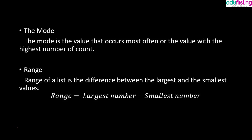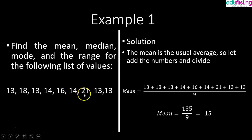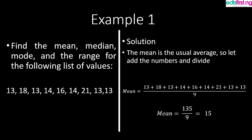Example one: find the mean, median, mode, and range for the following list of values: 13, 18, 14, 16, 14, 21, 13, 13. Solution: the mean is the usual average, so let's add all the numbers together.